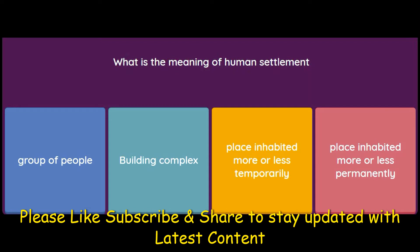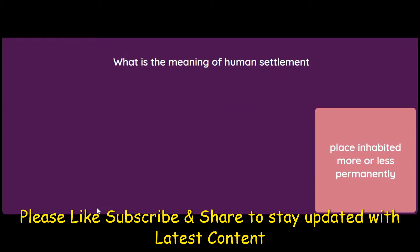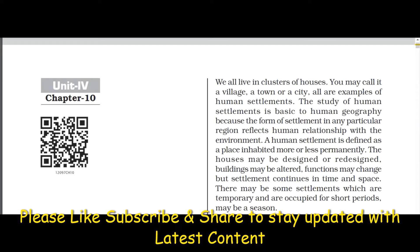What is the meaning of human settlement? The options are: a group of people, a building complex, a place inhabited more or less temporarily, or a place inhabited more or less permanently. The answer is: a place inhabited more or less permanently. As defined in the book, a human settlement is a place inhabited more or less permanently — the houses may be designed or redesigned, buildings may be altered, functions may change, but the settlement continues in time and space.